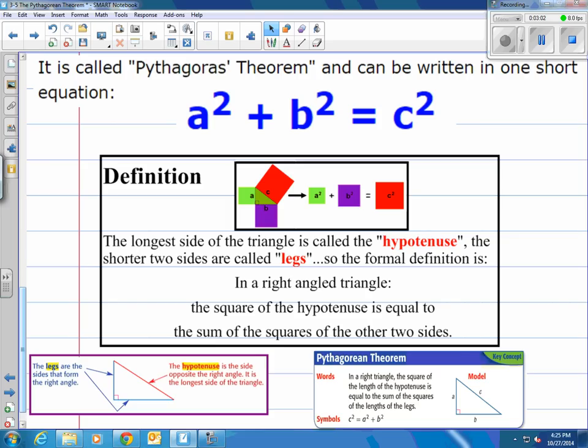And the definition goes as you can see here there's a few things you need to know first though. It says the longest side of the triangle is called the hypotenuse. The shorter two sides are called legs so the formal definition is this. In a right angled triangle the square of the hypotenuse is equal to the sum of the squares of the other two sides. I did throw in the information from the book down there on the bottom about legs and hypotenuse and then also the Pythagorean theorem in its key concept form.